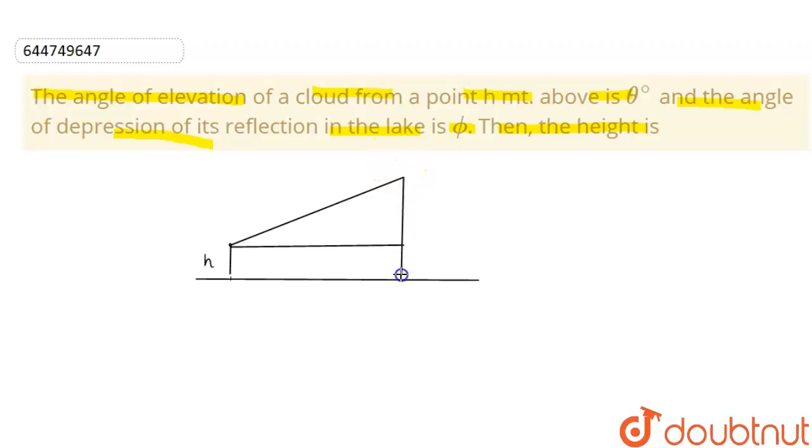We have been given that the angle of elevation is given to us as theta and the angle of depression will be this - angle of depression is given to us as phi.